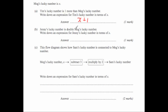Jenny's lucky number is double Meg's lucky number. Well hers is x and we want to double it. That means multiply by 2. Well 2 times x in algebra is 2x.